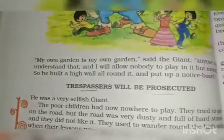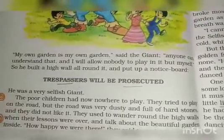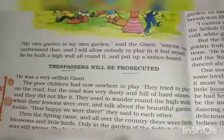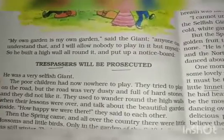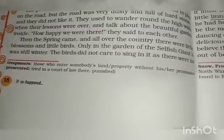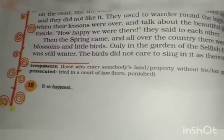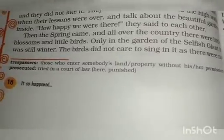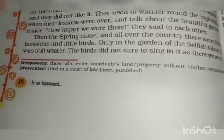'My own garden is my own garden,' said the giant. 'Anyone can understand that, and I will allow nobody to play in it but myself.' So he built a high wall all around it and put up a notice board that read: 'Trespassers will be prosecuted.' Trespassers are those who enter somebody's land or property without permission — they will be punished.